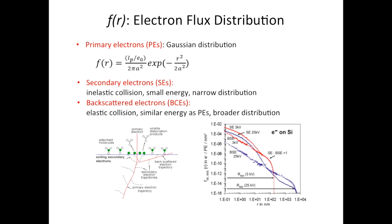Now I will focus on each of these parameters. The first one is electron flux distribution. The primary electrons follow the Gaussian distribution, and from this general expression we can see that the distribution is also related to the incident electron beam energy, which is represented by the current I_P here.